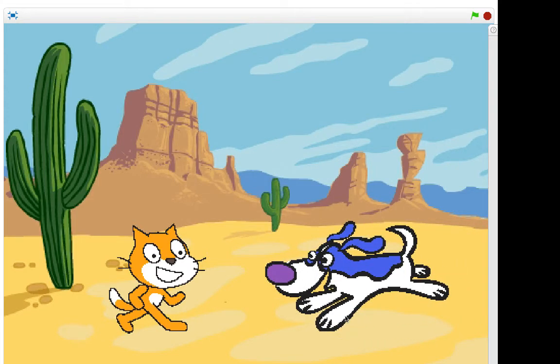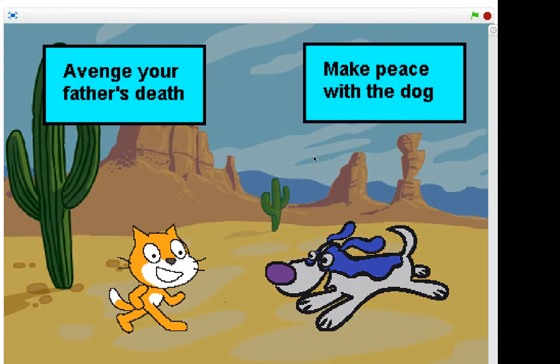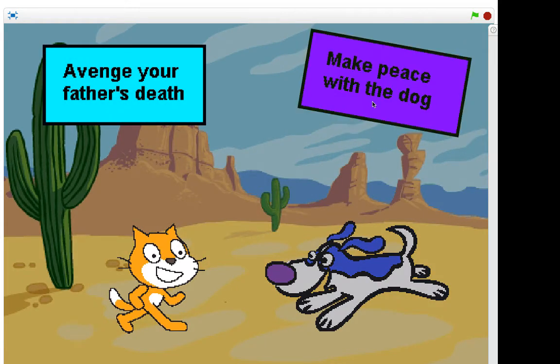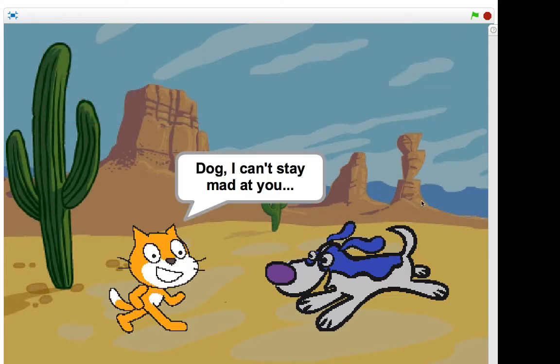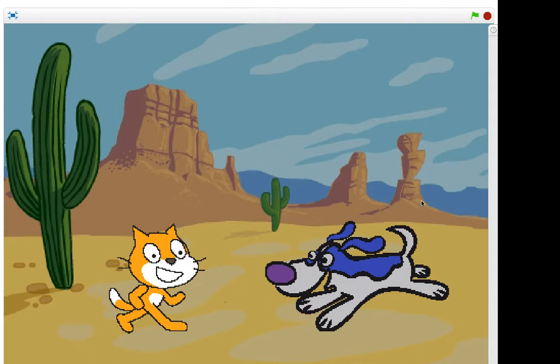So we go make peace with the dog. Yeah, what? Notice if I click the other option, it will have a different story that unfolds. So we'll make peace with the dog. Dog. I can't stay mad at you. Oops, my transition didn't go away. Oh, how sweet of you. Et cetera.